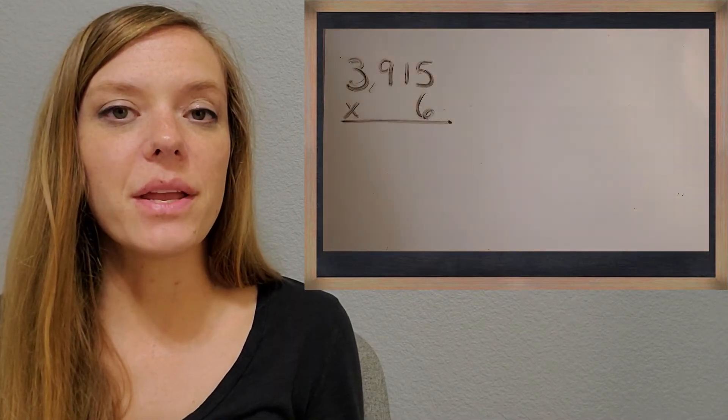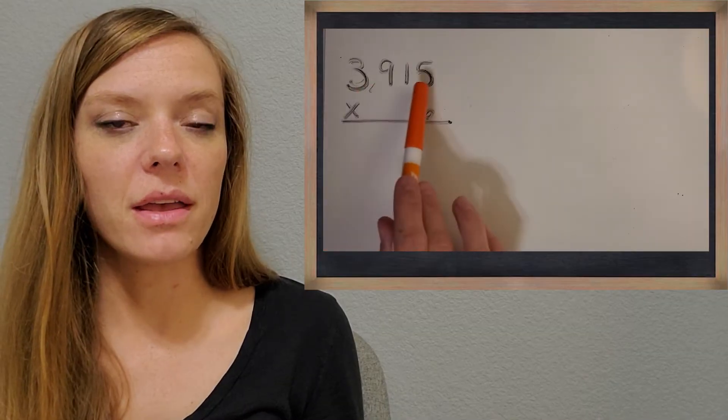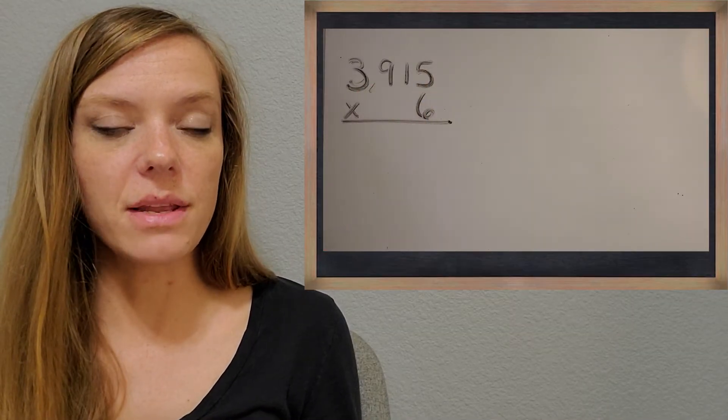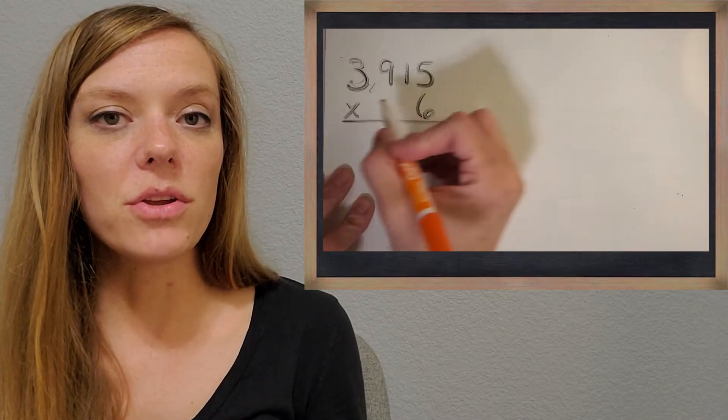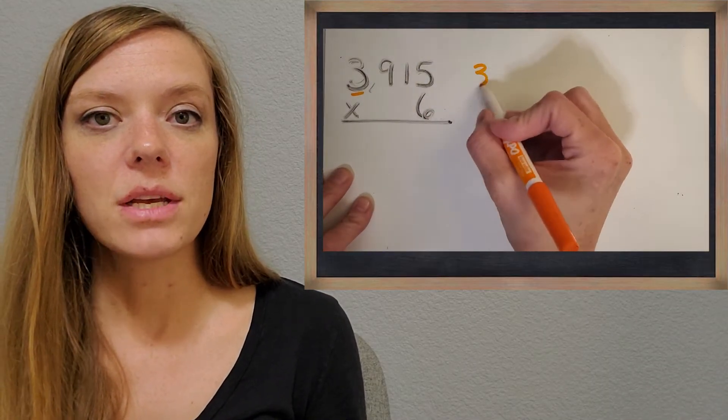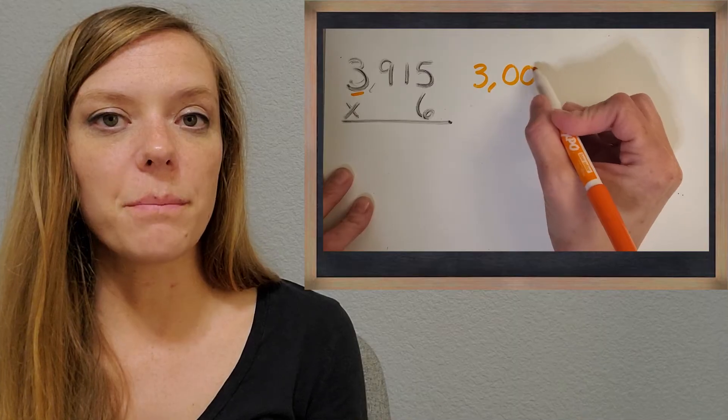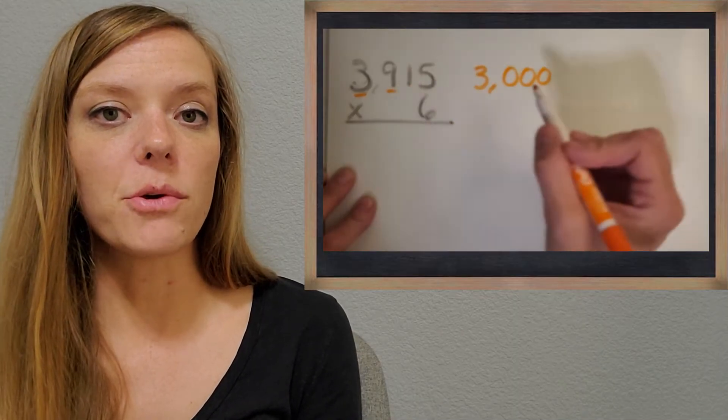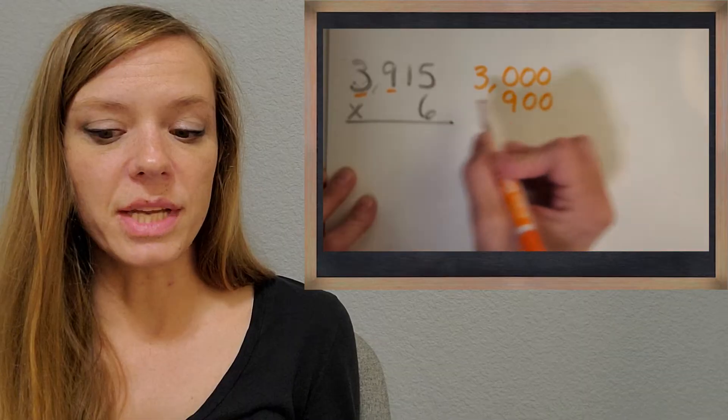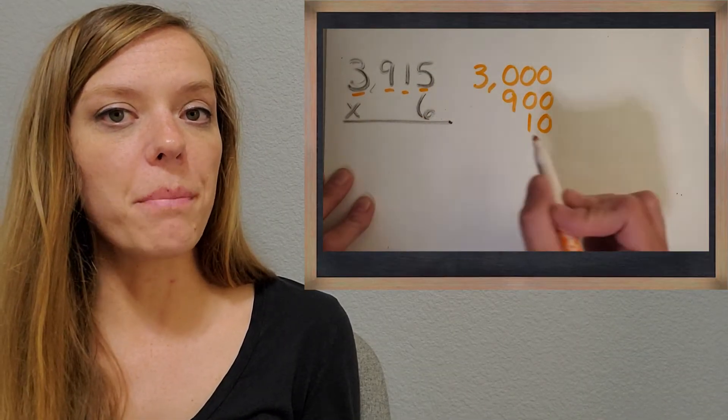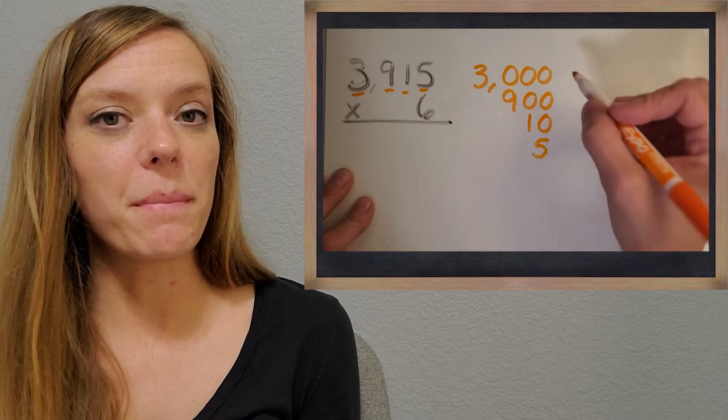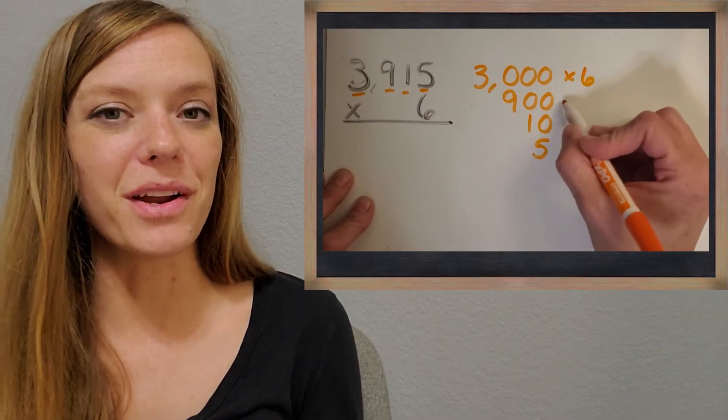All right, so here's one that I want you to try. This is 3,915 times six. So I want you to try writing out the digits based on its place value. Write all of those down and try multiplying them all by six. And then we'll get back together and check your work.